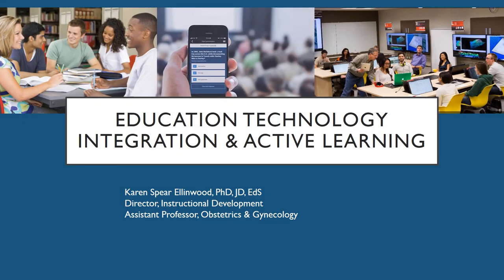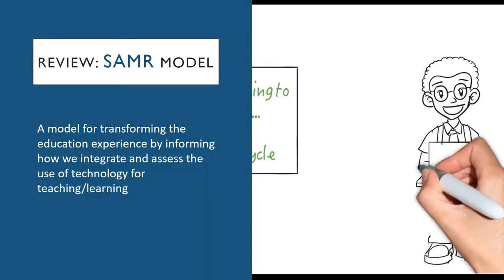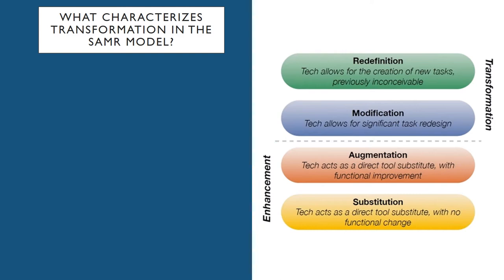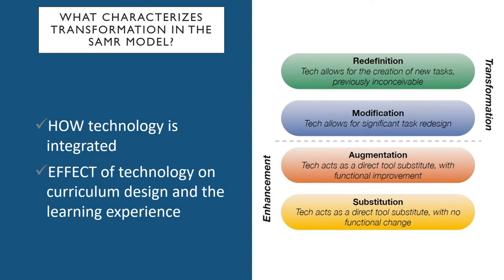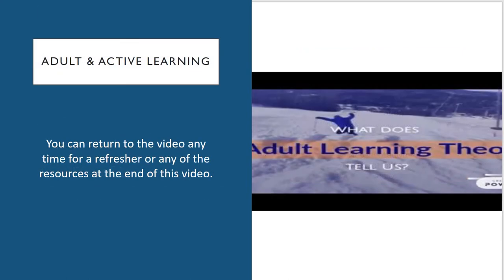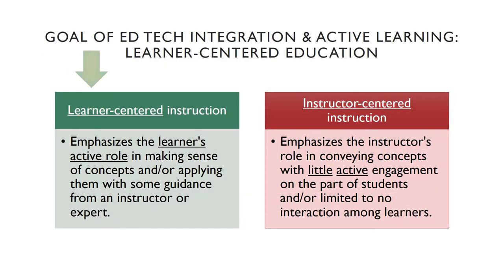Hi everyone, it was great to meet with you all yesterday. I thought instead of just sending this PowerPoint as a PDF or a plain PowerPoint, I would give you a short narration with some comments to follow up on our great discussion yesterday. I hope it's helpful. These next four slides give you a quick review of the definition of the SAMR model and its purpose, and a reference to the adult and active learning video, as well as what the whole goal is with active learning — principally being that we want to transform the learner role into someone who's more actively making sense of the material, of the concepts, and applying them.